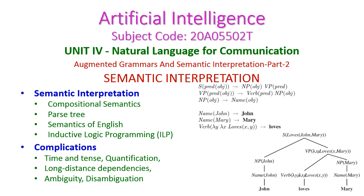In today's artificial intelligence class, we will see the second part of Augmented Grammars and Semantic Interpretation from the 4th Unit, Natural Language for Communication. Under this topic, we will see compositional semantics, parse tree, semantics for English, and inductive logic programming (ILP). After that, we will see the complications: time and tense, quantification, long distance dependencies, and ambiguity and disambiguation.